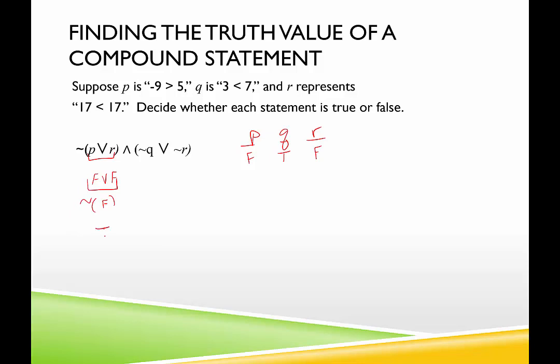False or false is false, but then it's asking for the negation of that. The negation of a false statement is a true statement. So this whole thing here is true, but we're not done yet. Now we have to conjunction this with the second piece. The second piece, we have not Q, since Q is true, not Q is false, or not R, not false, is true.